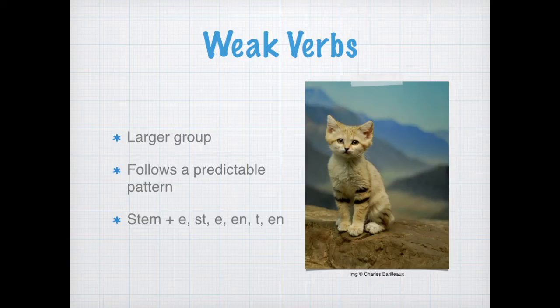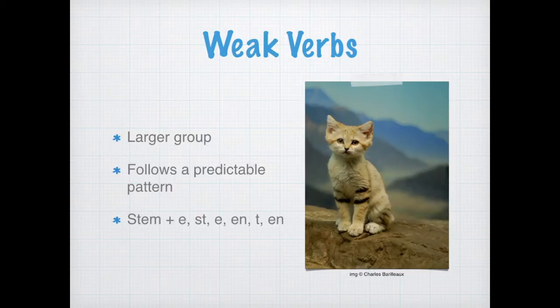The weak verb — that's the much, much larger group — is the one that just behaves in a really predictable pattern. You take your stem, you add an ending, and nothing really happens to either the stem or the ending that would divert from the rule in any way. So those are easy. Examples of those verbs include machen, lieben, and lernen.